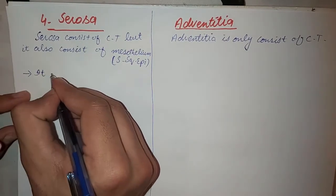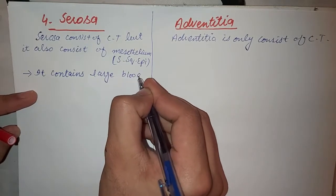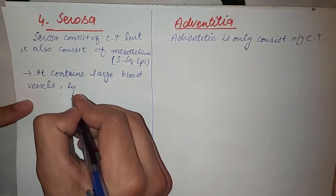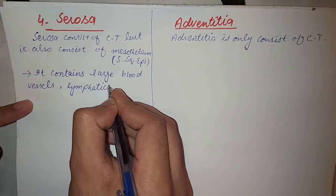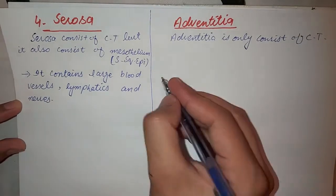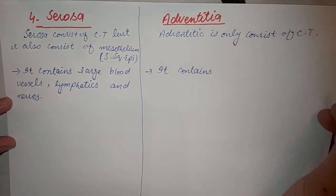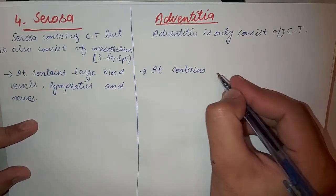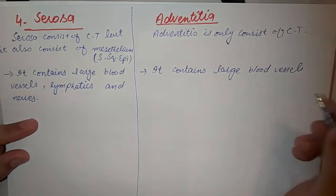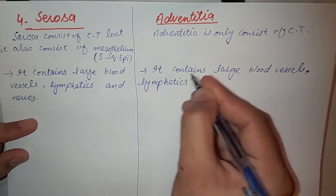Serosa contains large blood vessels, lymphatics, and nerves. Adventitia also contains large blood vessels, lymphatics, and nerves.